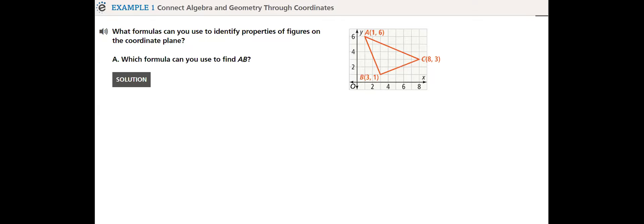We'll go to Example 1: Connect Algebra and Geometry Through Coordinates. What formulas can you use to identify properties of figures on the coordinate plane? Which formula can you use to find AB? We'll use the distance formula. This lesson is basically like revision for all what you have taken before. When the question says bisect AB, we will be using the midpoint formula.